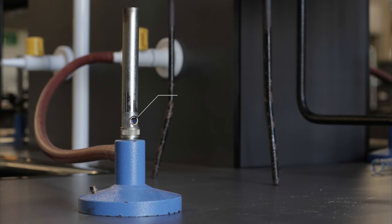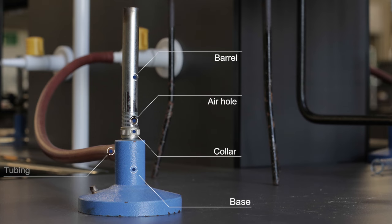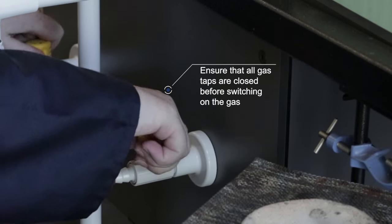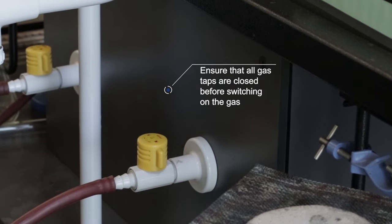A Bunsen burner consists of an air hole, collar, barrel and base with tubing connected by the base. Make sure that all gas taps on the bench are closed first before opening the gas supply to the bench.